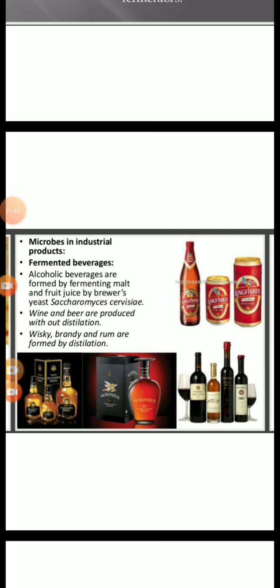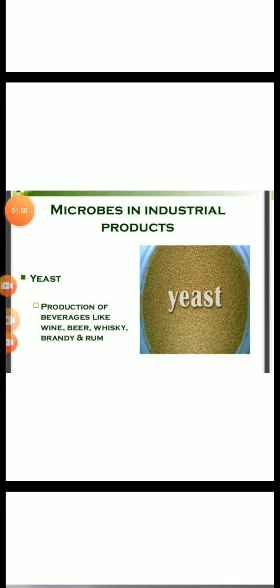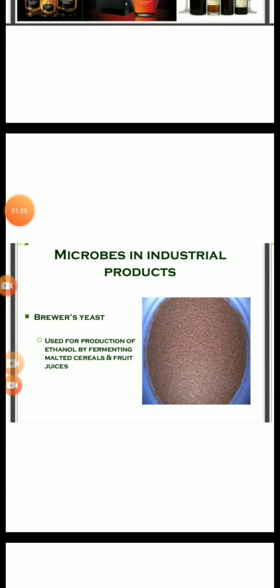First, we will start with fermented beverages. Microbes, especially yeast, are being used from time immemorial for the production of beverages like wine, beer, whiskey, brandy, or rum. For this purpose, the yeast Saccharomyces cerevisiae — commonly called brewer's yeast — is used for fermenting malted cereals and fruit juices to produce ethanol.